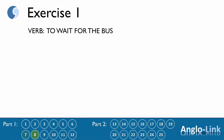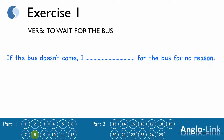Number 8: 'If the bus doesn't come, I ___ for the bus for no reason.' Answer: 'If the bus doesn't come, I will have waited for the bus for no reason.' Future perfect.